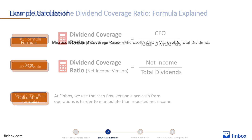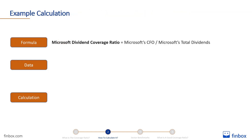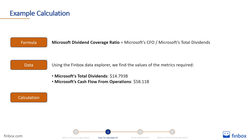To illustrate, we can use the formula above to calculate Microsoft's dividend coverage ratio. Using the Finbox Data Explorer, we can find the values of the metrics required: Microsoft total dividends and Microsoft cash flow from operations. We can now calculate Microsoft's dividend coverage ratio by dividing cash flow from operations by total dividends. Microsoft's coverage ratio suggests that the company can pay its dividend 3.9 times with its cash flow from operations.